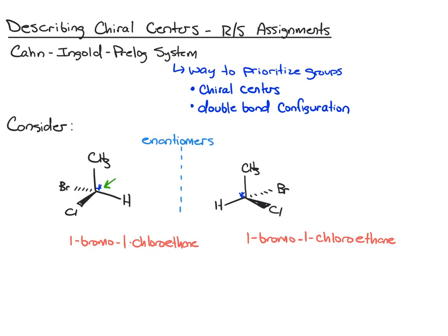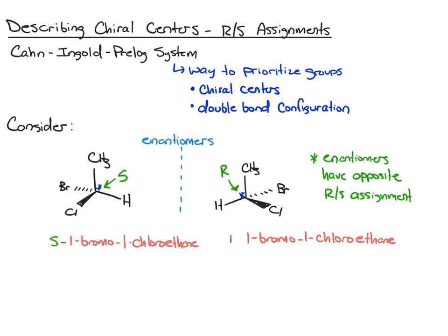In this first enantiomer, the chiral center has an S configuration. And the other enantiomer, the chiral center has the R assignment. This brings us to an important feature: enantiomers will have opposite R/S assignments. If one molecule has an S assignment, its enantiomer will have the R assignment. The way you communicate this to the reader is you start the IUPAC name with the particular R/S assignment for the chiral center.